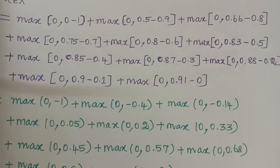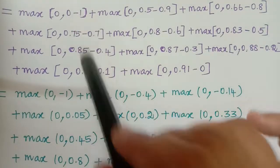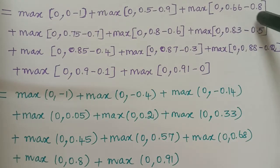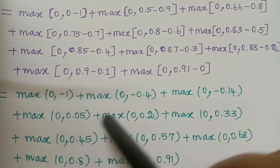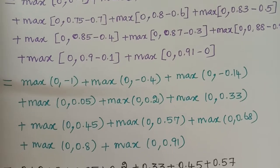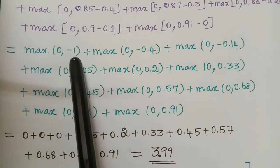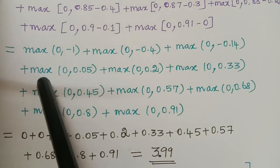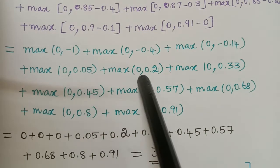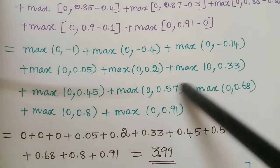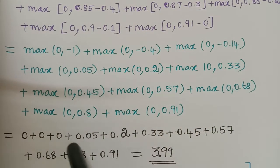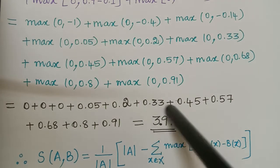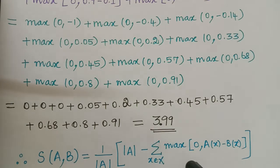After computing the differences: 0 - 1 = -1, 0.5 - 0.9 = -0.4, 0.66 - 0.8 = -0.14, and similarly for the remaining values. Then we select the maximum of 0 and each difference. The maximum is 0 for the negative values; for the positive differences we get 0.05, 0.2, and 0.33. Summing all the maximum values gives 3.99.